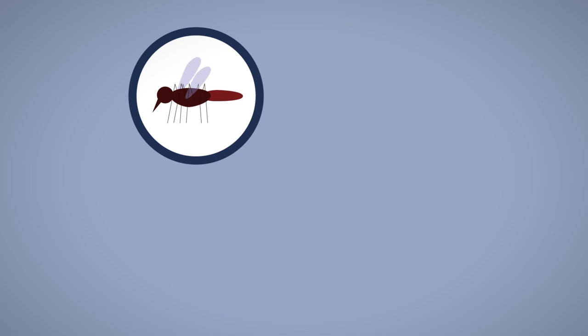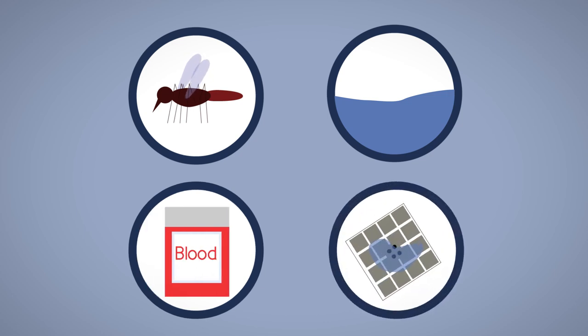Malaria is transmitted by mosquitoes, whereas cholera is a water-borne disease. HIV is transmitted through bodily fluids. Athlete's foot is transmitted by direct contact.